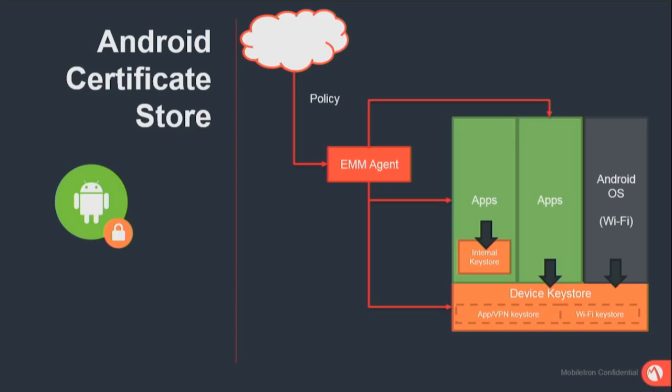A third model is where the app manages all certs within itself. Some VPN clients, like our Mi Tunnel, store the certs within the client. To provision the certificate, you don't push it to the device key store because the app doesn't look there — it looks into the certificate provisioned in its internal key store. This is the complexity: you need to understand where certificates end up. Depending on the app, the service, and whether the app has its internal key store, you need to provision the keys — both the ID certificate and the CA certificate — in the right place.